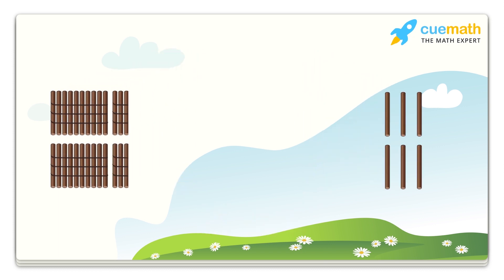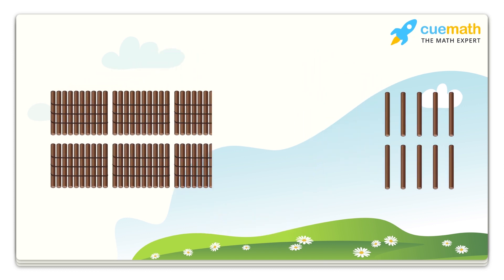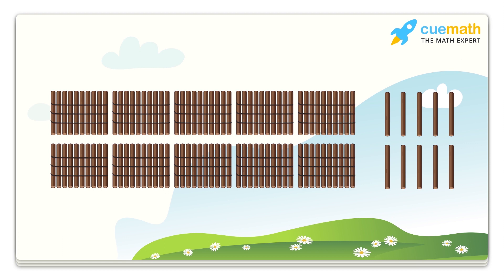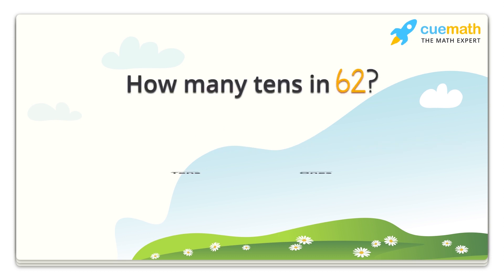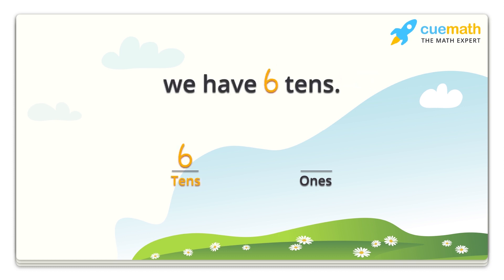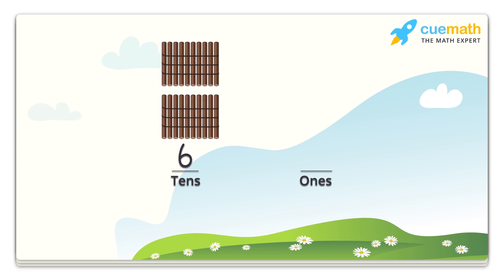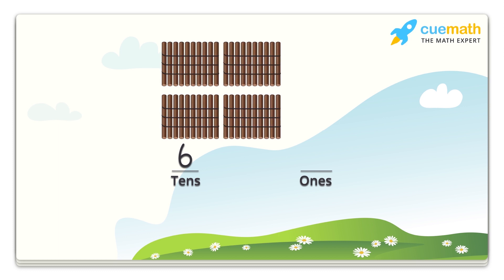There are some bundles of ten sticks and some loose sticks in the farm. Now we need sixty-two sticks from them. How many tens do we have in the number sixty-two? Yes, we have six tens. So how many bundles should we take? As we have six tens, we will take six bundles of ten sticks each.